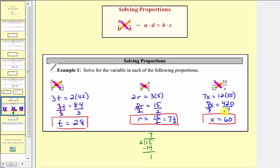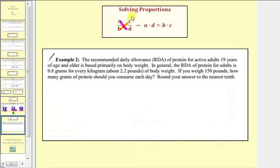Now let's look at an application problem. The recommended daily allowance or RDA of protein for active adults 19 years of age and older is based primarily on body weight. In general, the RDA of protein for adults is 0.8 grams for every kilogram or about 2.2 pounds of body weight. If you weigh 150 pounds, how many grams of protein should you consume each day? And we're asked to round the answer to the nearest tenth if needed.